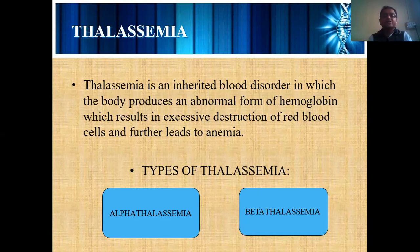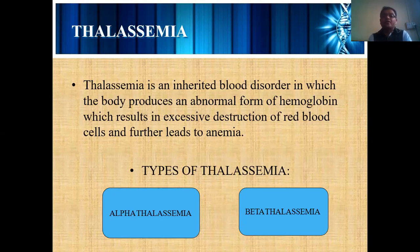In Thalassemia, the body produces an abnormal form of hemoglobin. In anemia there is a deficiency of hemoglobin, but in Thalassemia the hemoglobin that is formed is not the proper form — it cannot be utilized for the synthesis of red blood cells, resulting in excessive destruction of red blood cells and leading to anemia.